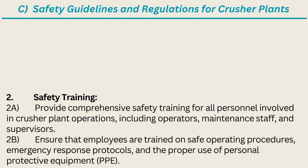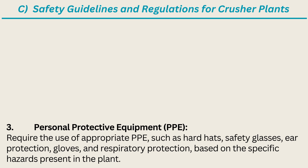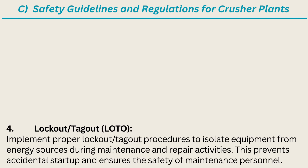2. Safety training. Provide comprehensive safety training for all personnel involved in crusher plant operations, including operators, maintenance staff, and supervisors. Ensure that employees are trained on safe operating procedures, emergency response protocols, and the proper use of personal protective equipment (PPE). 3. Personal protective equipment (PPE). Require the use of appropriate PPE, such as hard hats, safety glasses, ear protection, gloves, and respiratory protection, based on the specific hazards present in the plant. 4. Lockout / tagout (LOTO). Implement proper lockout / tagout procedures to isolate equipment from energy sources during maintenance and repair activities. This prevents accidental startup and ensures the safety of maintenance personnel.